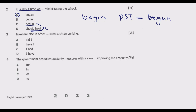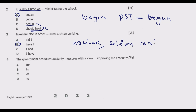Question three: 'Nowhere else in Africa ___ seen such a surprising sight.' Options: A: did I, B: have I, C: I see, D: I have. The answer is B — 'have I.' This sentence is an example of inversion, where the auxiliary verb 'have' comes before the subject 'I' for emphasis. This is often used after words like 'nowhere,' 'seldom,' 'rarely,' etc.